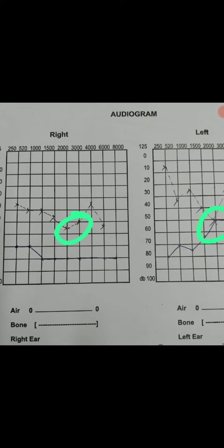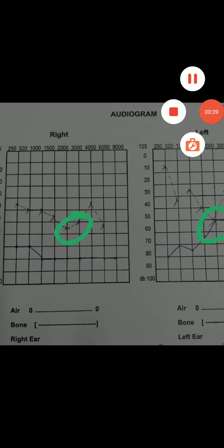And it represents the fixation of the footplate of the stapes to the oval window. So this is called as otosclerosis.